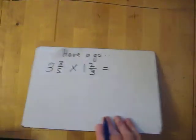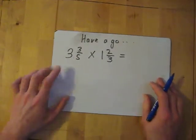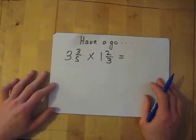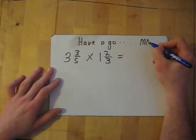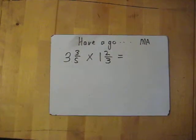Now, I want for you to have a go. So, we've got 3 and 3/5 times 1 and 2/3. Okay, so remember, mixed fraction. We need to use MA to turn it into an improper fraction. So if you want to pause, I'll go through the answer in about 3 seconds.